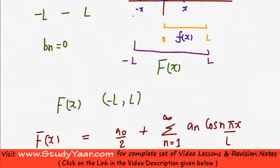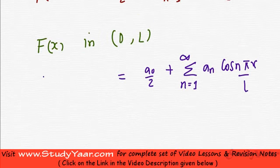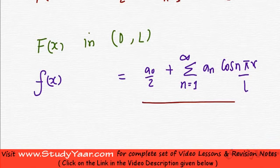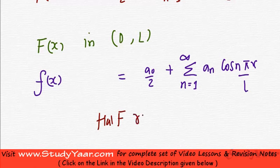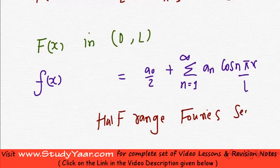So essentially what you have got is, you have represented your small f(x) between 0 to L as a series containing only cos terms. And this is known as half range Fourier series or half range cos Fourier series.